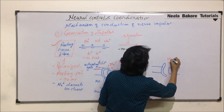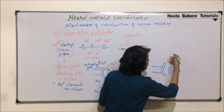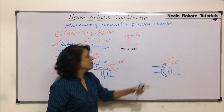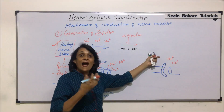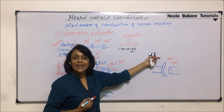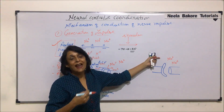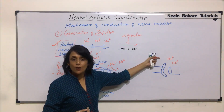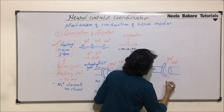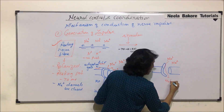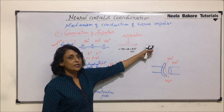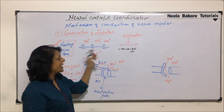All those sodium ions which were outside start moving in. Why are they moving in? Because their concentration was much higher on the outer side compared to the inner side — this is the concentration gradient. So from higher concentration, sodium ions start to diffuse inward.